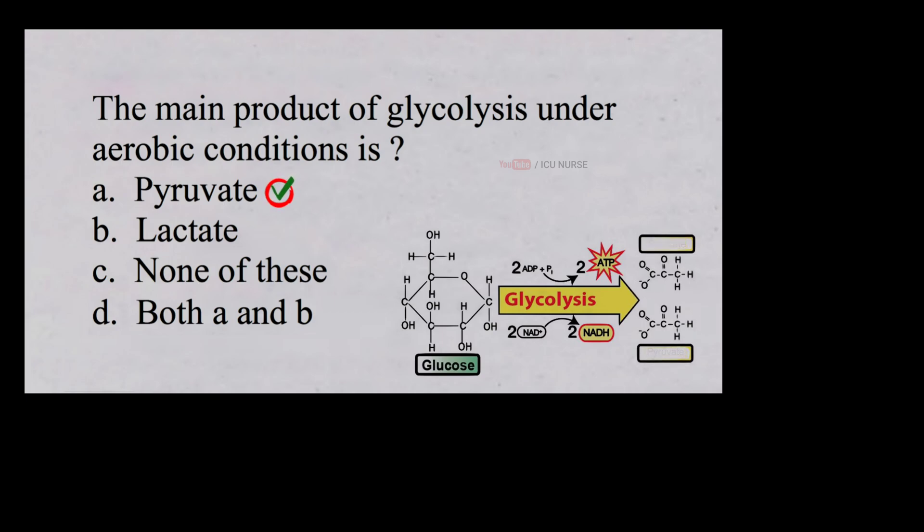The main product of glycolysis under aerobic conditions is pyruvate. Glycolysis is the process of breaking down glucose in a cell's cytoplasm to create pyruvate. In aerobic conditions, pyruvate enters the mitochondria and participates in the energy generation process.